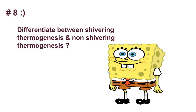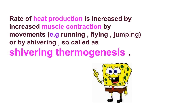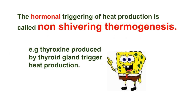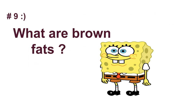Question number eight: differentiate between shivering thermogenesis and non-shivering thermogenesis. The rate of heat production is increased by increased muscle contraction through movements such as running, flying, jumping, or by shivering — this is called shivering thermogenesis. On the other hand, the hormonal triggering of heat production is called non-shivering thermogenesis. For example, thyroxine produced by the thyroid gland triggers heat production and is an example of non-shivering thermogenesis.